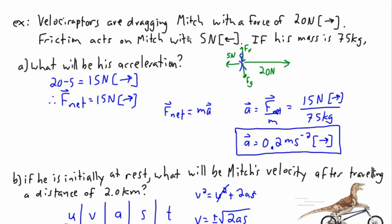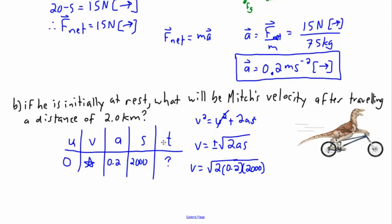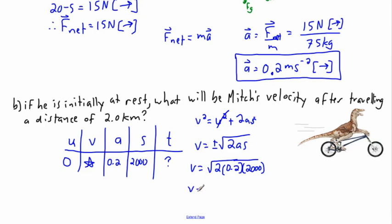I meant to use two significant figures everywhere — so 5.0, 20, 75, 2.0 — let's assume two significant figures throughout. Then my answer is approximately 29 meters per second. I put the dot on the equals sign to show it's not exactly equal to 29 — it's roughly 29 meters per second.